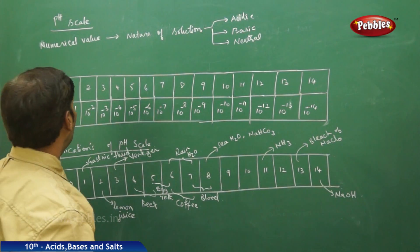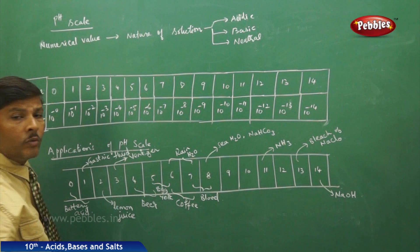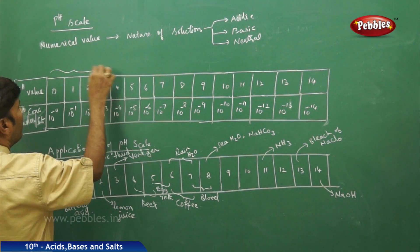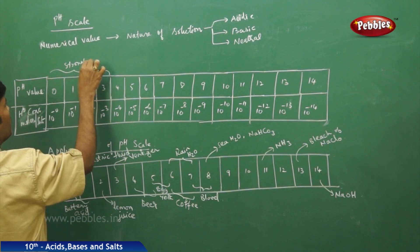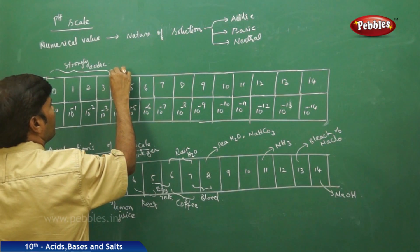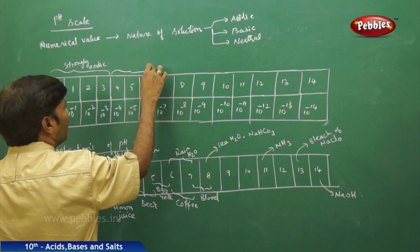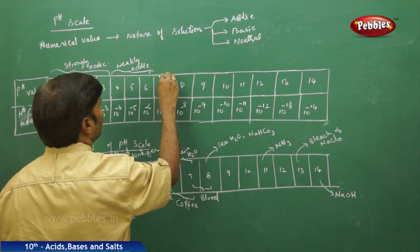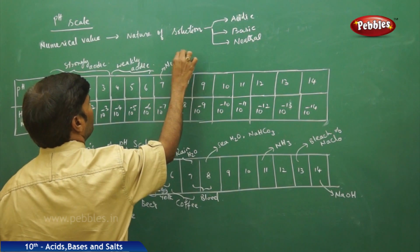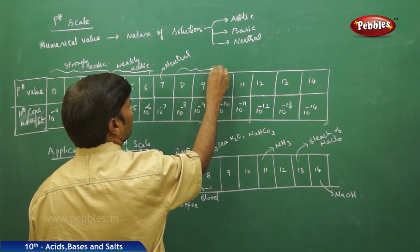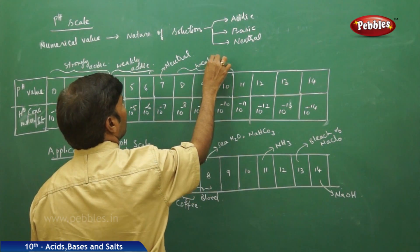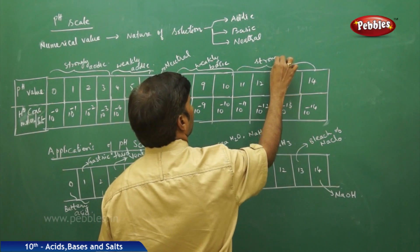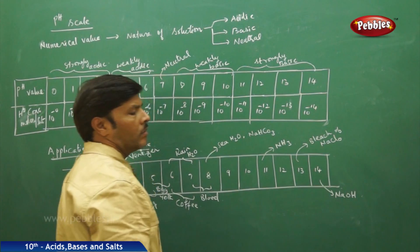The pH scale has certain limits. From 0 to 3.5 it is strongly acidic; 3.5 to 6.9 is weakly acidic; 7 is neutral; 8 to 10.5 is weakly basic; and 10.5 to 14 is strongly basic.